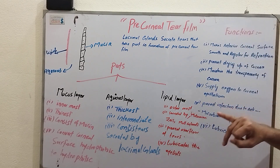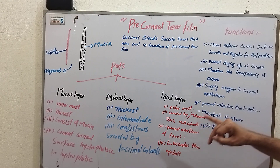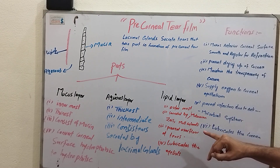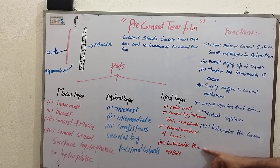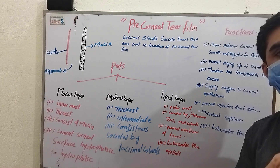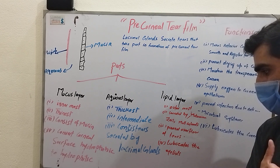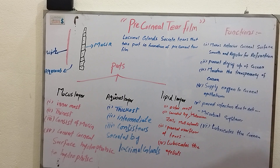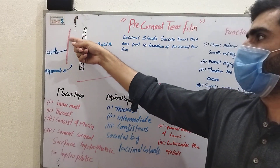The third layer is the lipid layer. It is the outermost layer, secreted by the meibomian glands. It prevents the overflow of tears and it lubricates the eyelids.